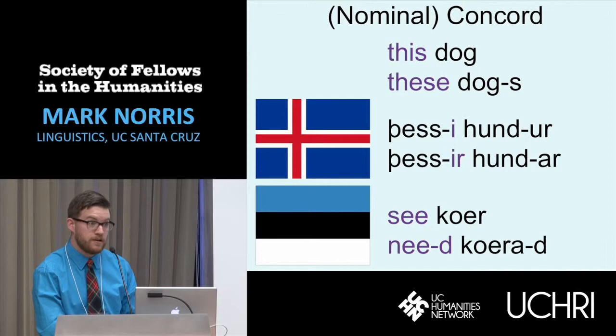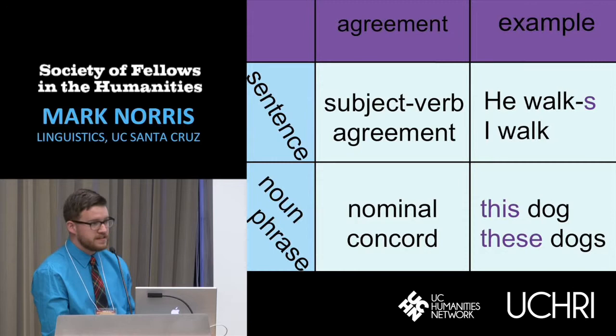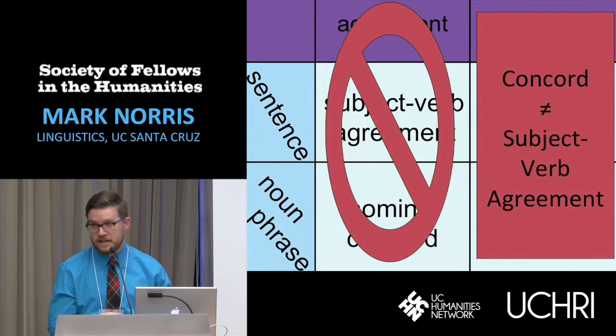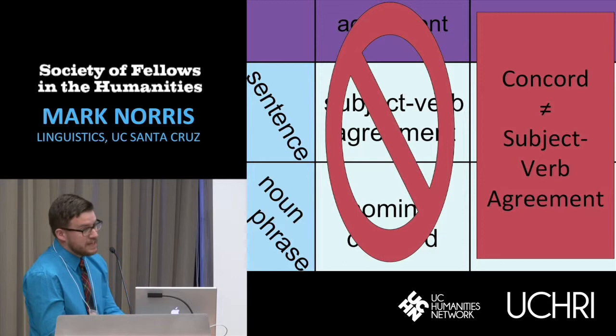Another kind of agreement inside noun phrases is often called nominal concord — for example, when a demonstrative agrees in number with its head noun: 'this dog,' 'these dogs.' This is also seen in Icelandic and Estonian. Given that we're looking for parallels between the sentence and the noun phrase, some scholars have suggested that subject-verb agreement in the sentence and nominal concord in the noun phrase must be two sides of the same coin. My dissertation argues that that's the wrong view, and that concord and subject-verb agreement have a number of properties that make them distinct enough that you should not consider them as two sides of the same coin.